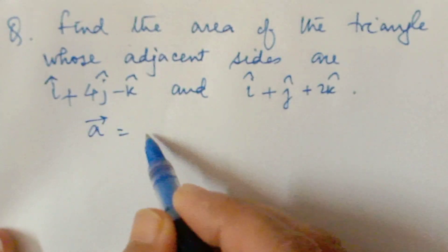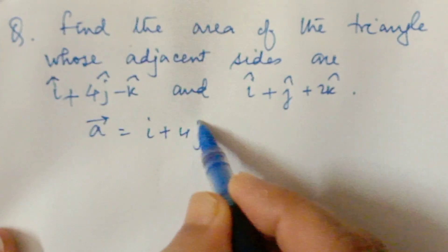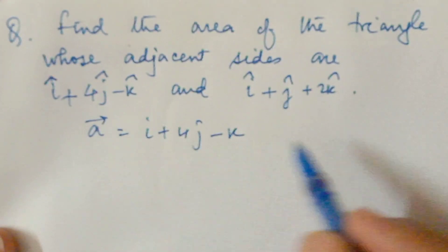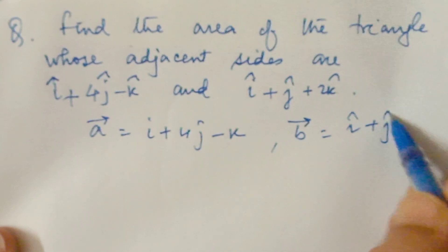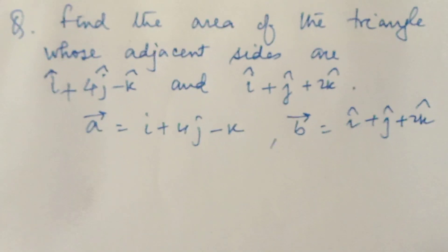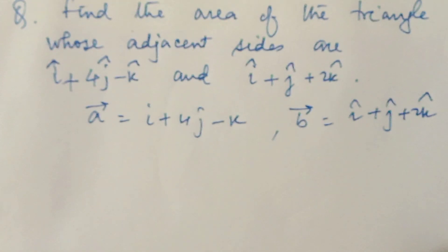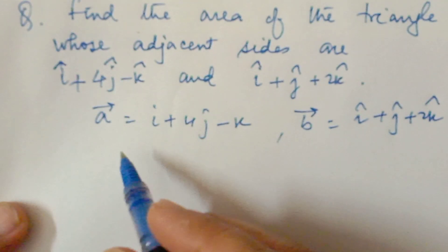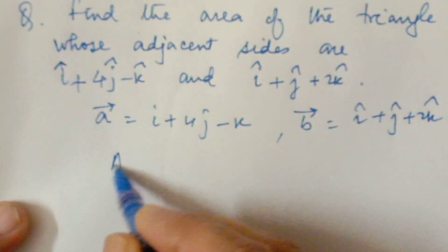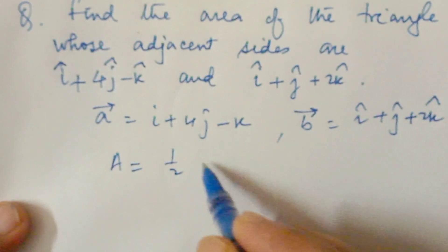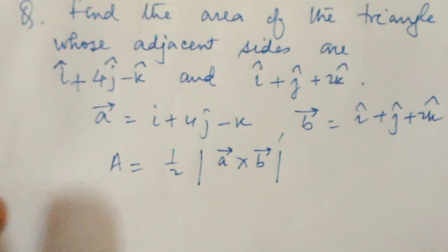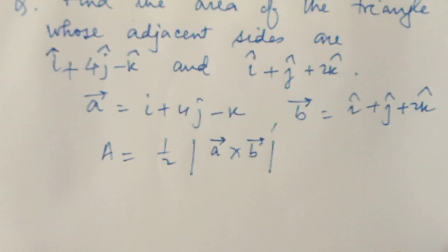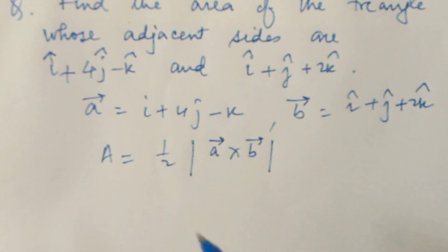Let us take vector a equals i plus 4j minus k and vector b equals i plus j plus 2k. When adjacent sides are given, the area of the triangle is half times the magnitude of a cross b. This is the formula for the area of a triangle when adjacent side vectors are given.